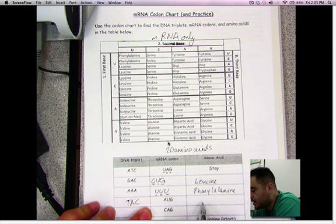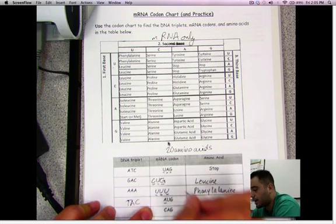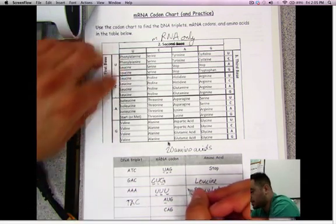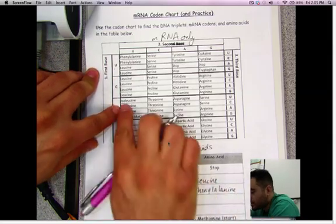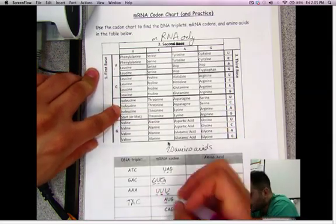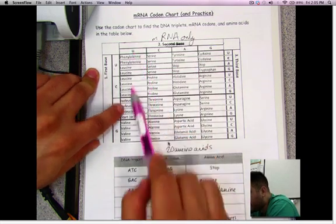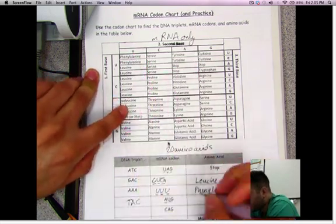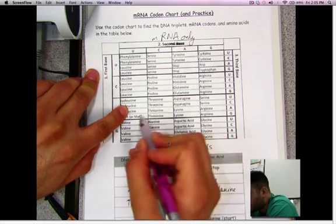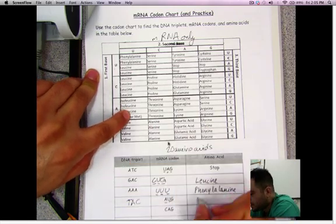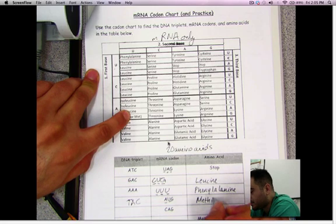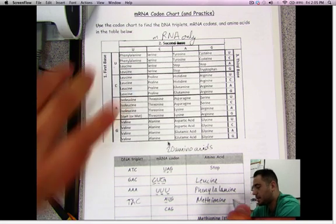Now from this to that, we just look at our chart, right? A, first base right here, so I know I'm in this row. U is the second base, I know I'm right here, AU. And then G, bring the G across, and it's MET. MET actually stands for methionine. So that's the amino acid that goes there.